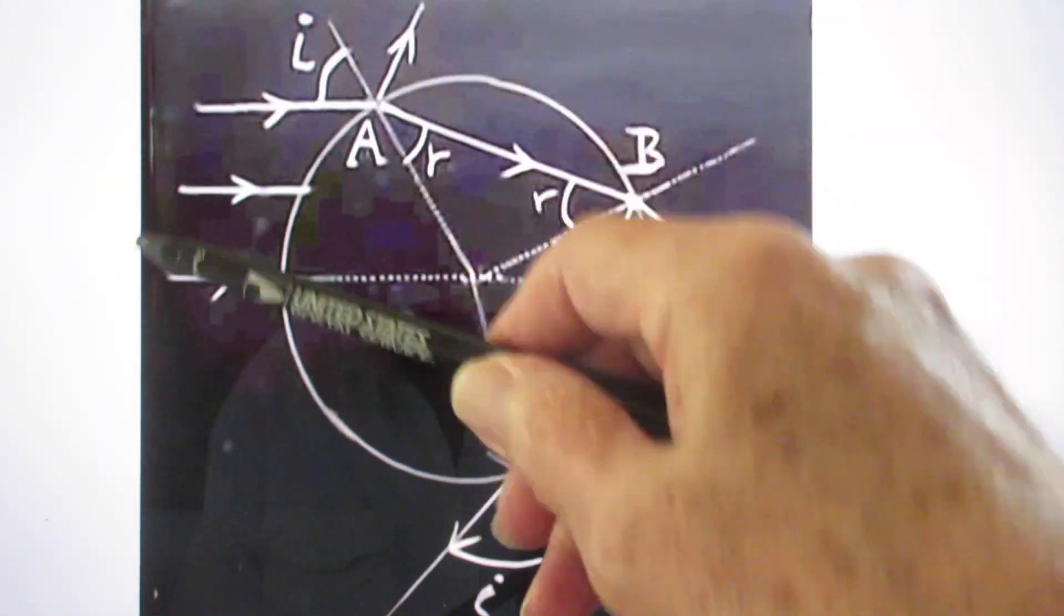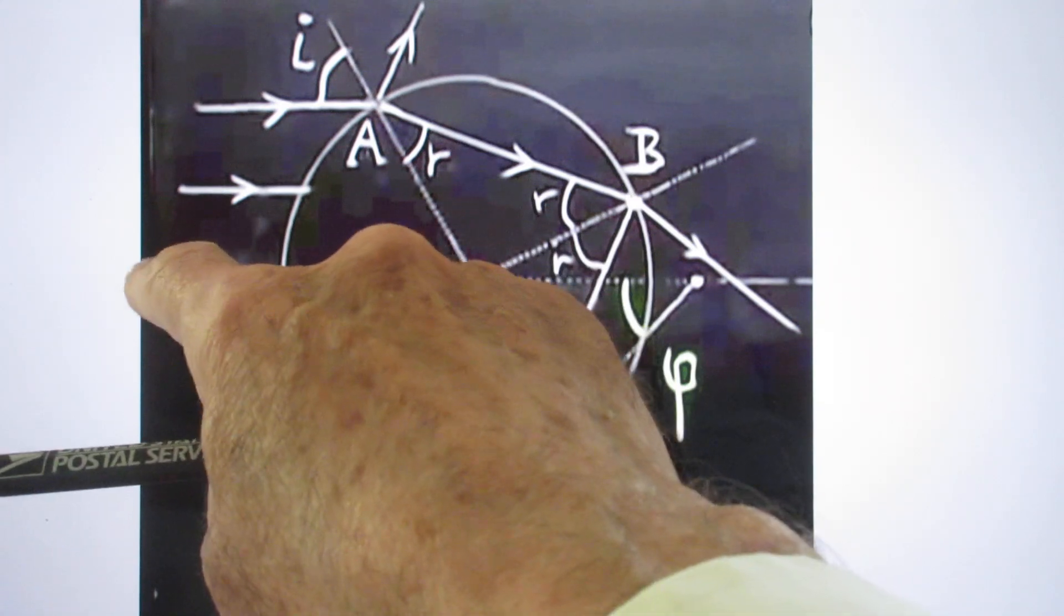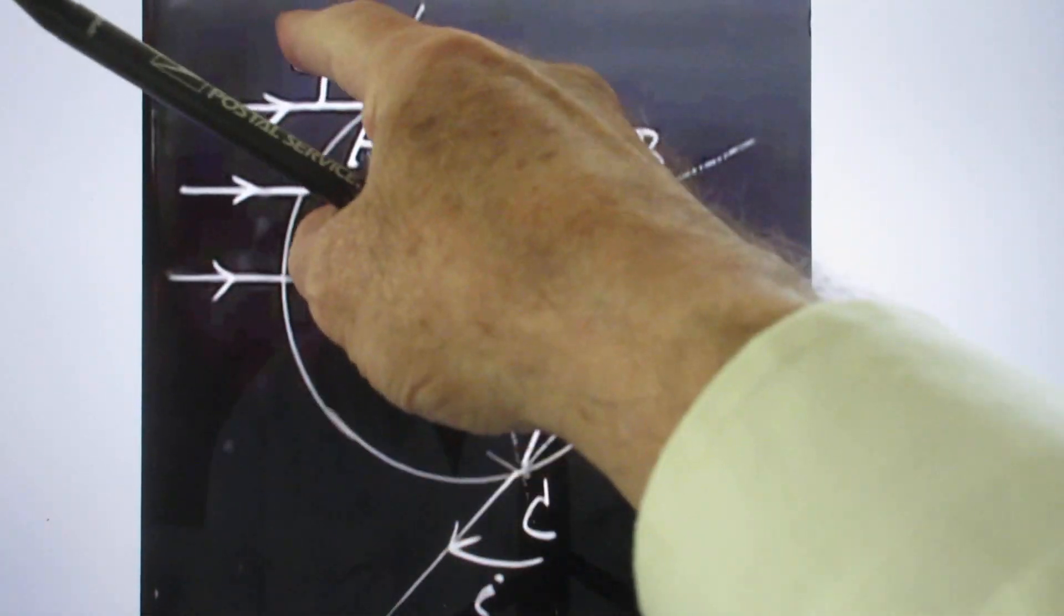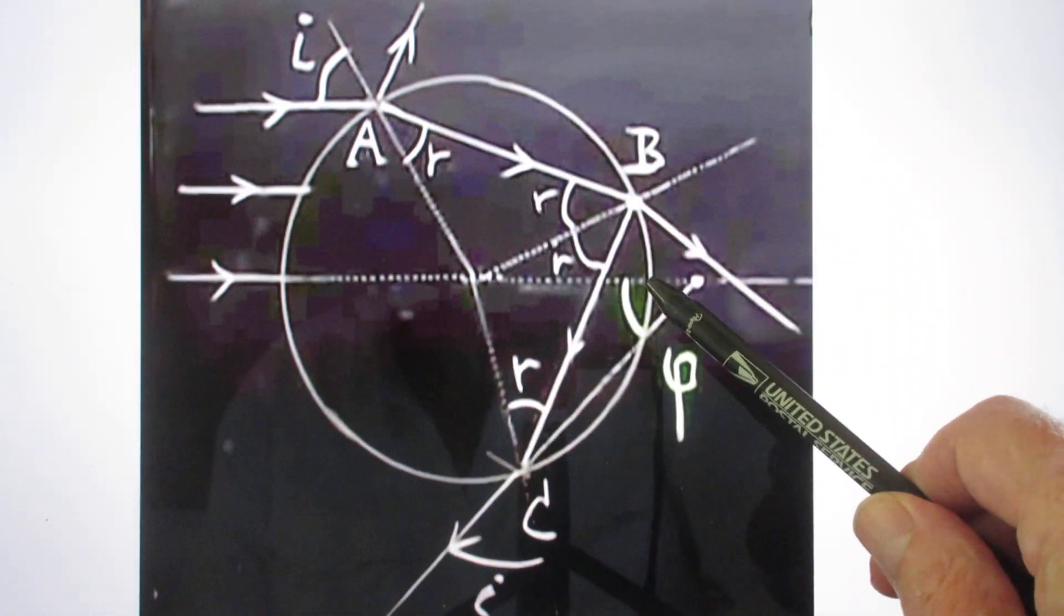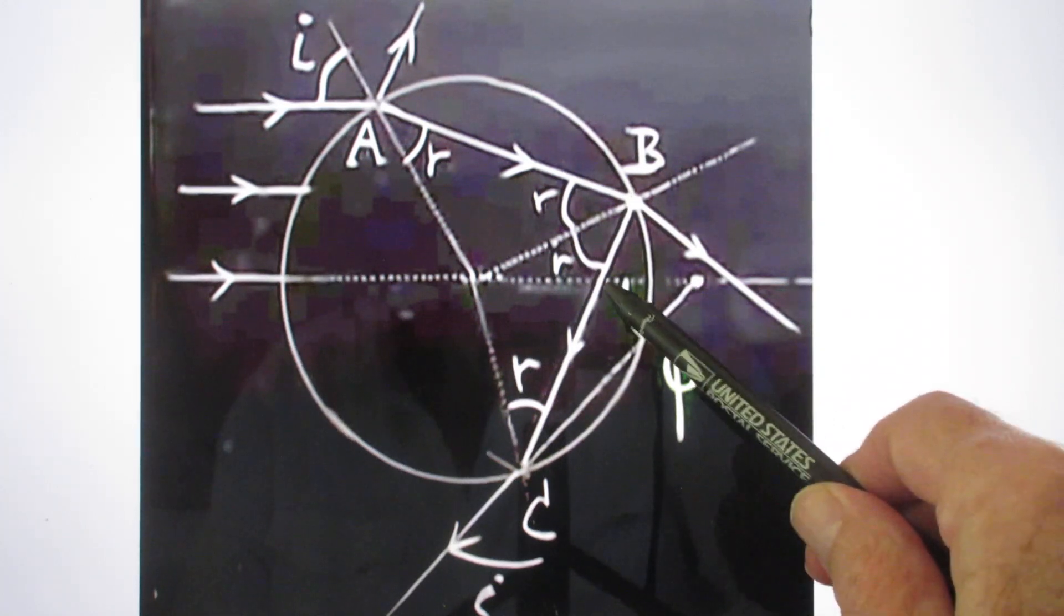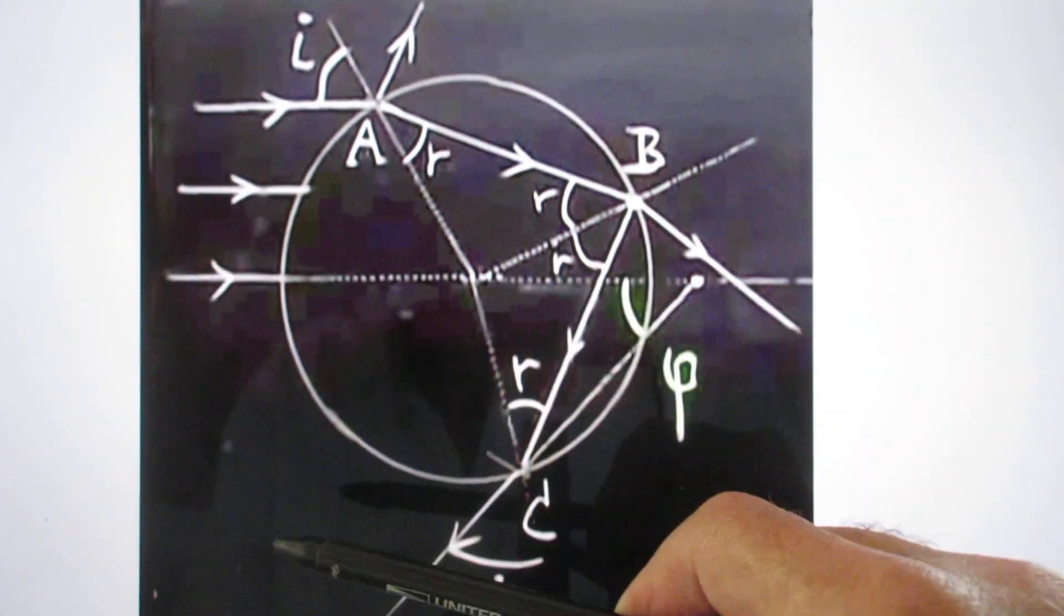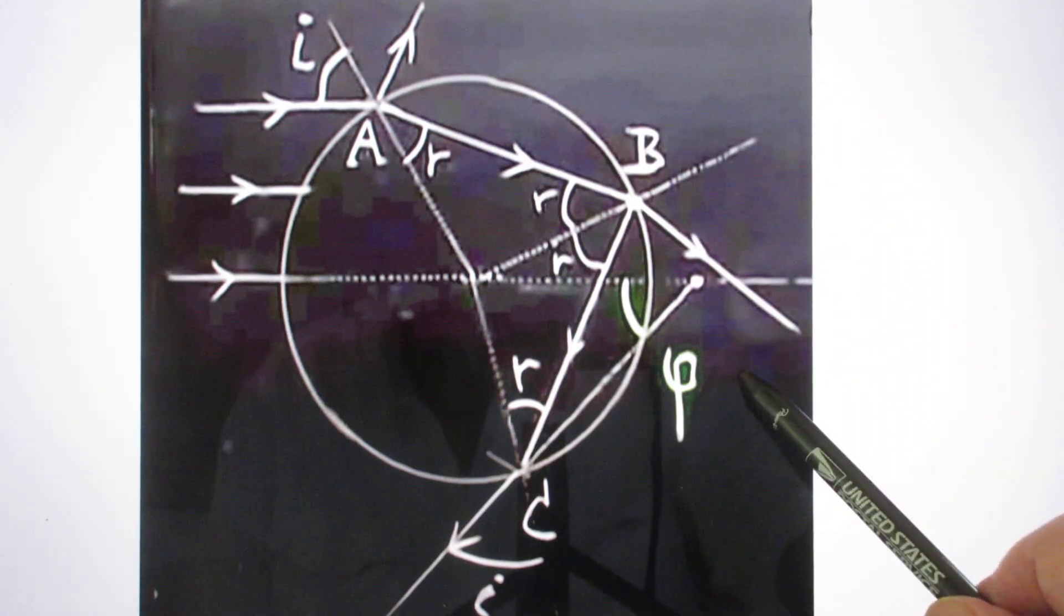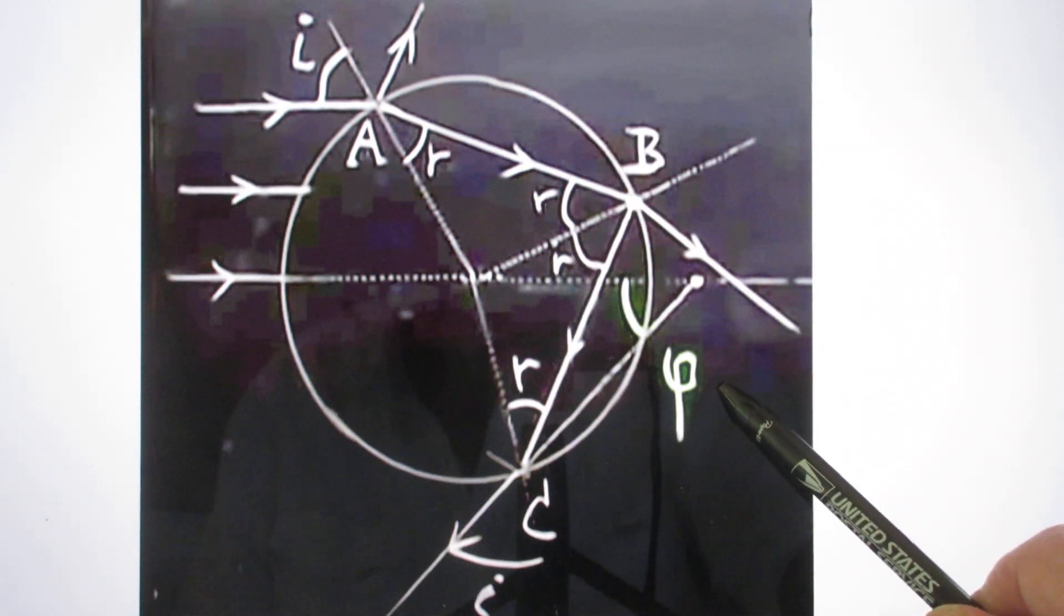Regardless of what the angle I is, because you can make I zero, this I is zero, this I is a little larger and this I is even larger. Regardless of the angle I, it is simple high school algebra to calculate what this angle phi is where the light comes out of the raindrop at C relative to the incoming. That light is phi. I will not do that here. It is totally trivial but I mentioned it in all my lectures. That angle phi is 4R minus 2I.